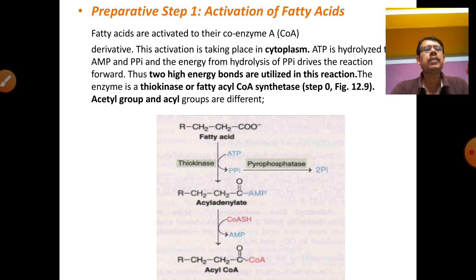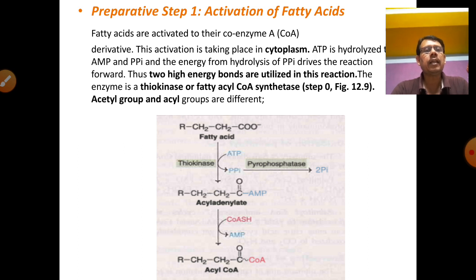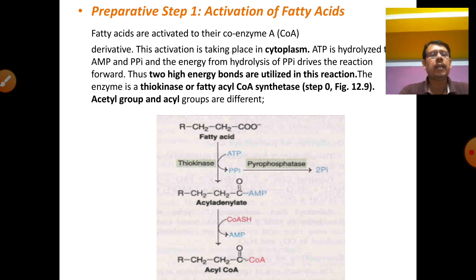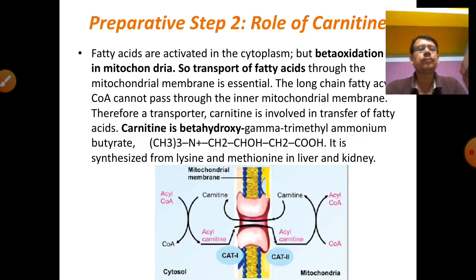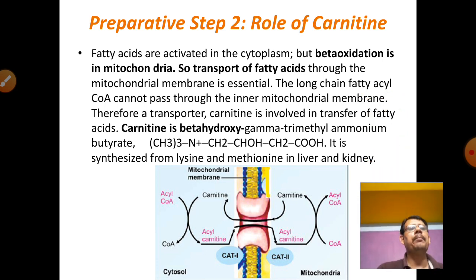The first step is activation of fatty acids. Thiokinase cleaves the bond of long-chain and medium-chain fatty acids. The fatty acid, in the presence of thiokinase, is converted to acyl-adenylate, utilizing two ATP equivalents in this first reaction. After that, acyl-adenylate is converted to acyl-CoA.